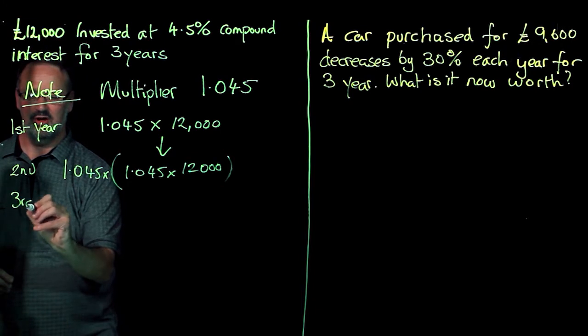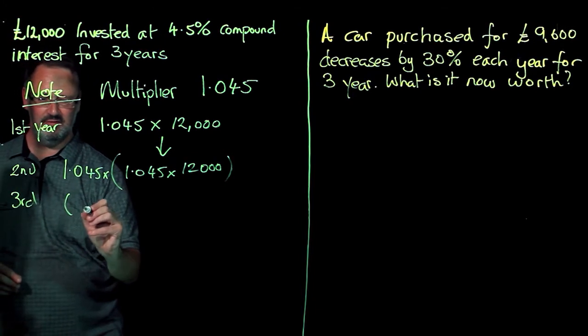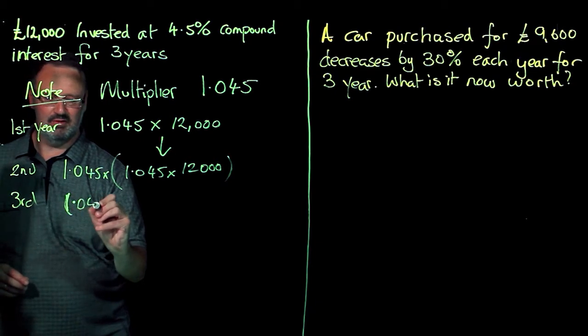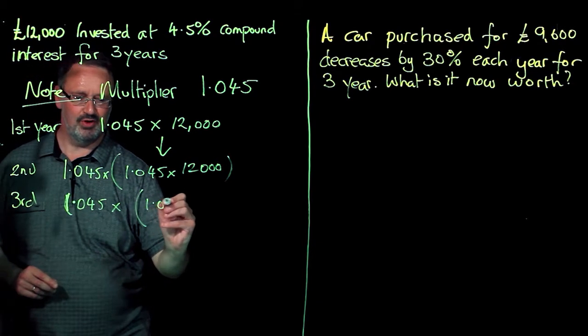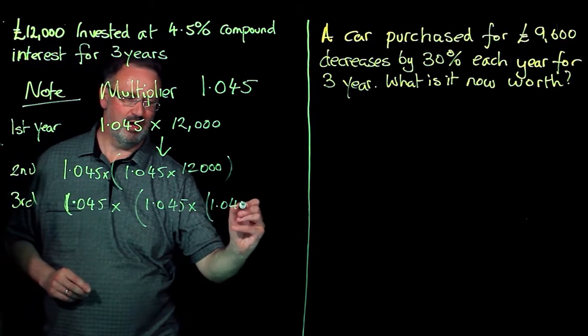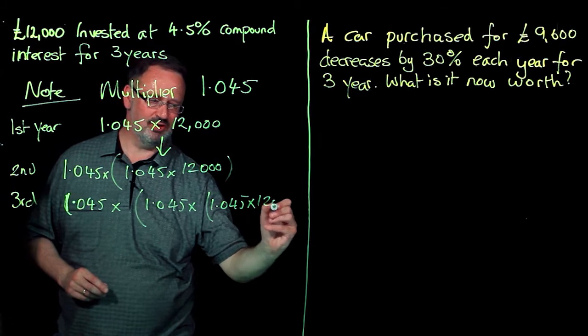My third year, take this amount and multiply it by 1.045. So it can be times 1.045 times 1.045. I'm going to show you a quick way in a second of doing all this.